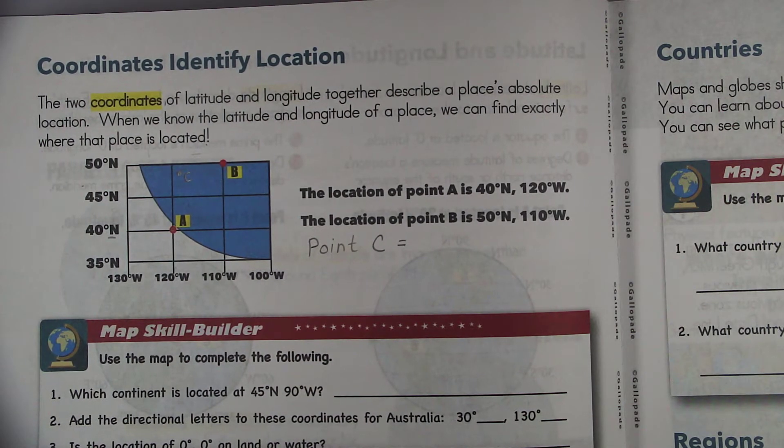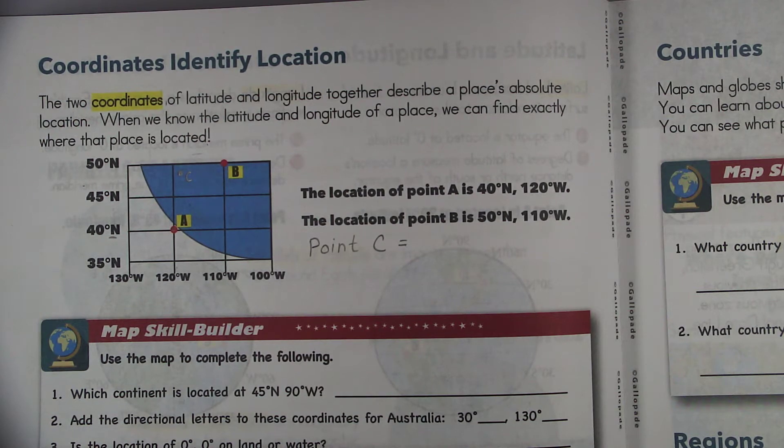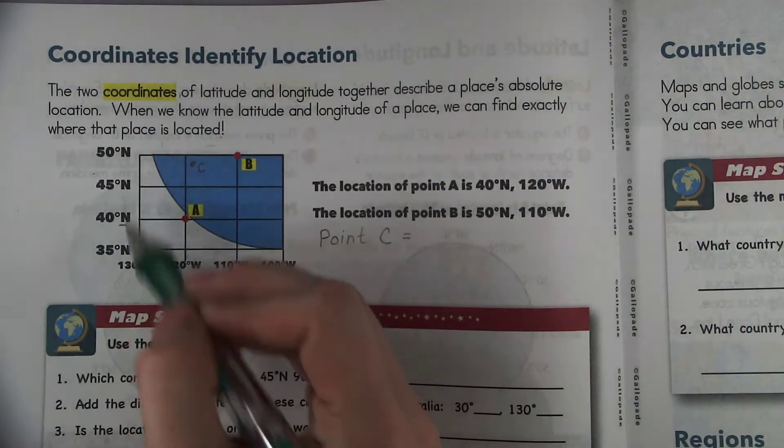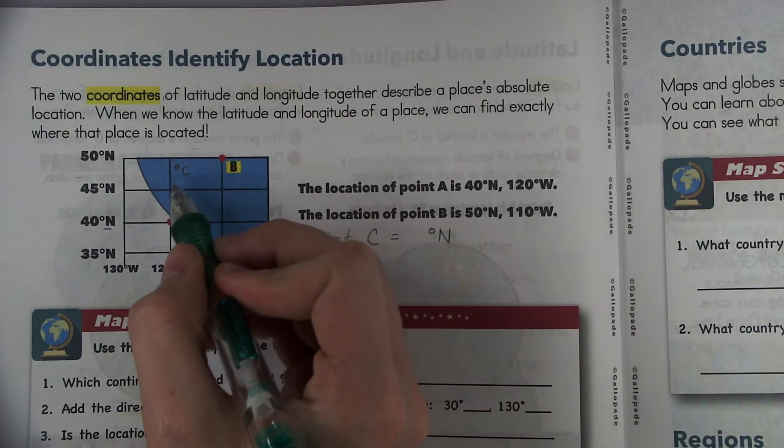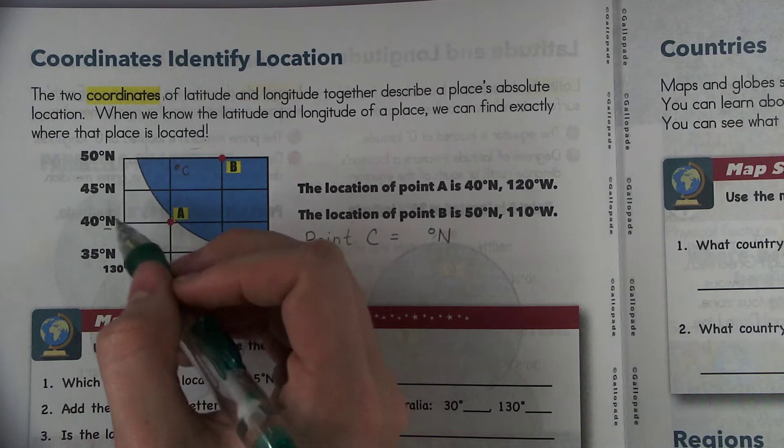So point C. So what we're going to find first is the north or south location. So as we can see it's going to be in the north so it's going to be something degrees north.